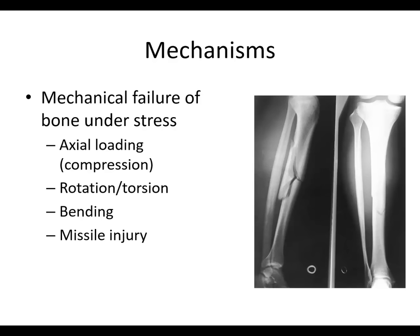Fractures occur by mechanisms such as mechanical failure of bone under stress — axial loading, which is a compressive force; rotation and torsion; bending; and missile injury. For example, a rotational injury can cause a spiraling fracture, and a bending injury can cause a fracture where you can imagine a bending force has been applied. Unfortunately, at Temple Hospital we see a lot of gunshot injuries.